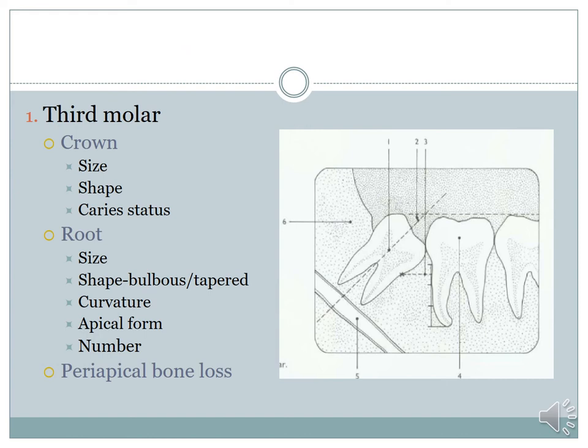For the crown, look for its shape, size, and caries status. If the shape of the crown is more bulbous, the size is bigger, and there is no caries, then it is going to be difficult. For the roots: if the root is short, tapered, has a more acute curvature, or there are more than two roots, it is going to be difficult.